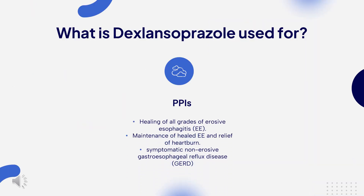What is dexlansoprazole used for? Dexlansoprazole is a proton pump inhibitor (PPI) indicated in patients 12 years of age and older for healing of all grades of erosive esophagitis (EE), maintenance of healed EE and relief of heartburn, and treatment of symptomatic non-erosive gastroesophageal reflux disease (GERD).